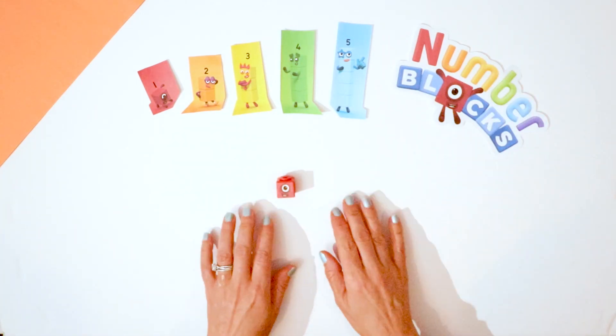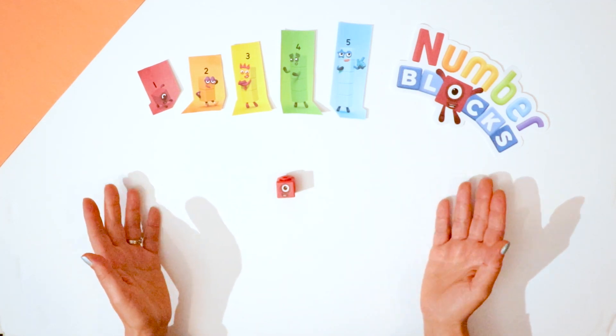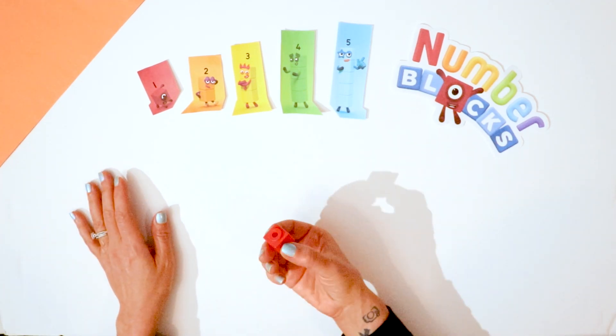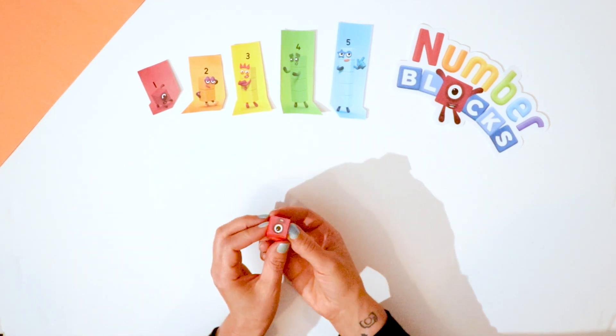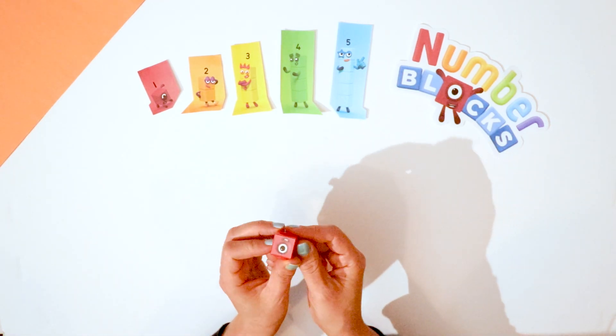One plus nothing still equals one. We have number block number one. One plus zero equals one.